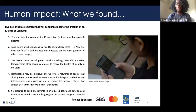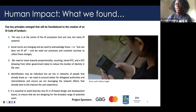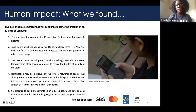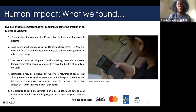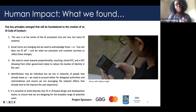Five key principles emerged from this phase of work, which will be foundational in creating the ID code of conduct. The first is that the user is at the center of the ID ecosystem. So often we think about digital identity as a technical problem to be solved, and that doesn't put the user at the very center. The key thing from doing this research first was making sure we put the user at the center, because ultimately the technology is an enabler — it should enable the user to get access to the services they need.